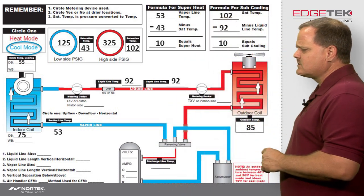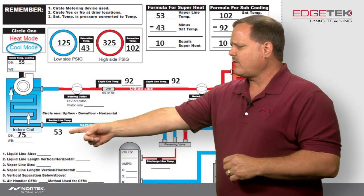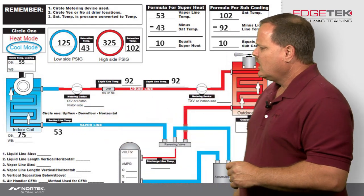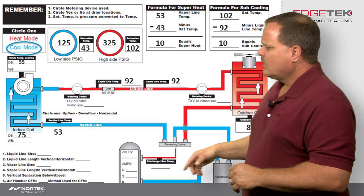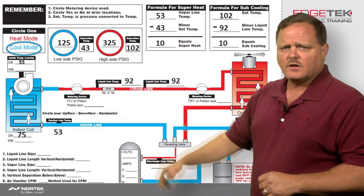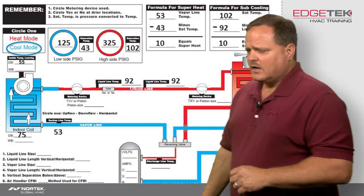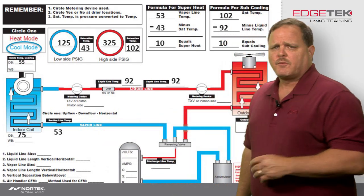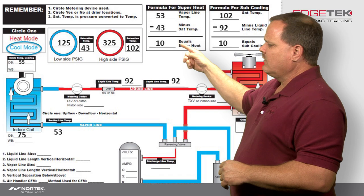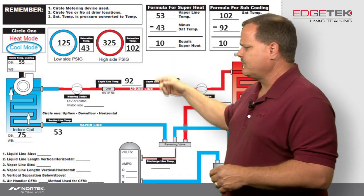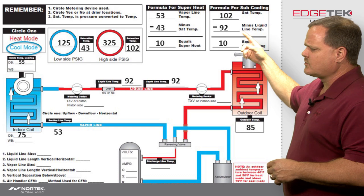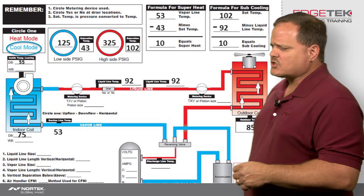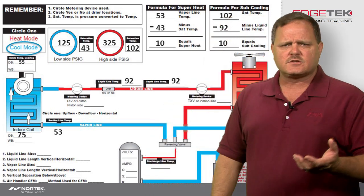This is a normal operating system. We're in cool mode. We've got a 75 degree indoor temperature and a 55 degree leaving temperature — that's a 20 degree temperature drop across the coil. Outside we've got 85 degree entering condensing temperature, 125 pound suction pressure, 325 pound head pressure, 92 degree liquid line temperature, and a 53 degree suction line temperature. When we throw it into the formulas: 53 minus 43 gives me 10 degrees of superheat. On the subcooling side, we've got 102 degree condensing temperature and a 92 degree liquid line temperature giving me 10 degrees of subcooling.